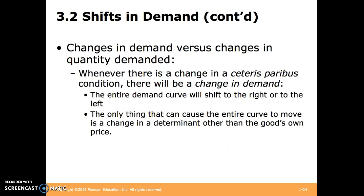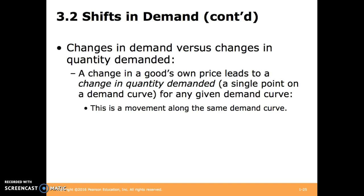Changes in demand versus changes in quantity demanded: a change in any ceteris paribus condition will be a change in demand — that is, a shift in the entire demand curve to the right or left. The only thing that can cause the entire curve to move is a change in a determinant other than the good's own price. However, if the good's own price changes, that causes a change in quantity demanded — a movement along the curve to a different price and quantity point.